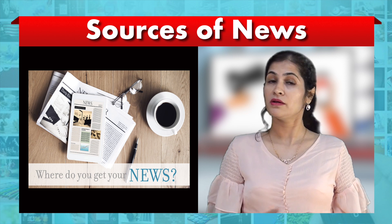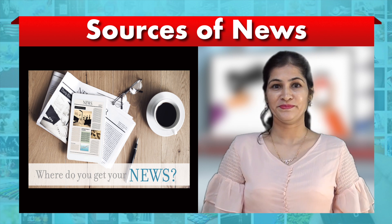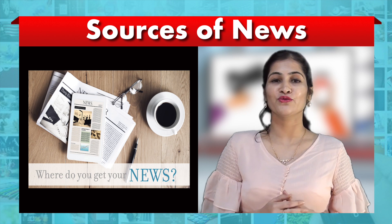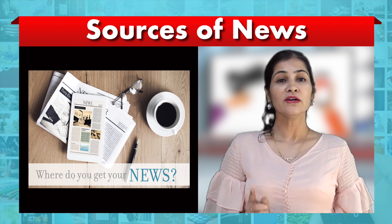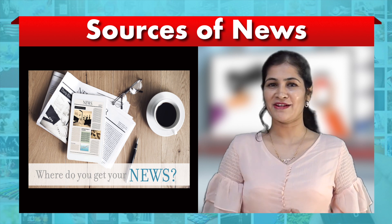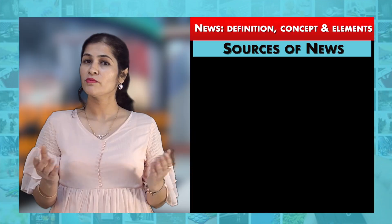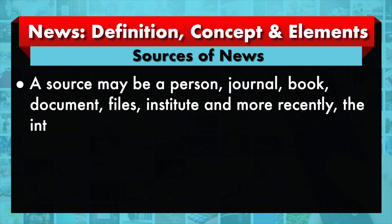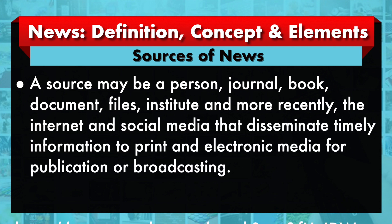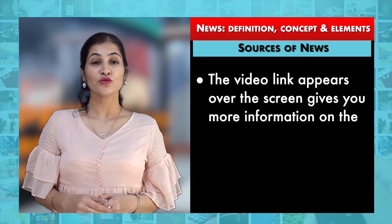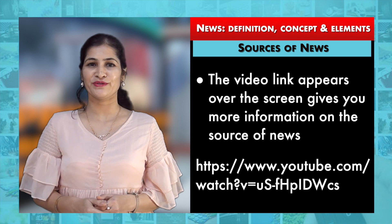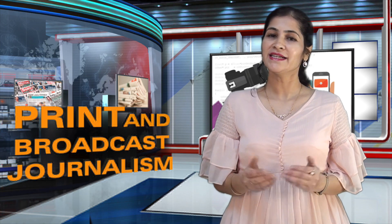A journalist may not be everywhere all the time to report incidents, hence he or she relies on various methods to get information about events they cannot witness themselves. When someone or something provides you with information, we call them a source. Sources of news are innumerable — a source may be a person, journal, book, document, files, institute, and more recently the internet and social media that disseminate timely information to print and electronic media for publication or broadcasting.